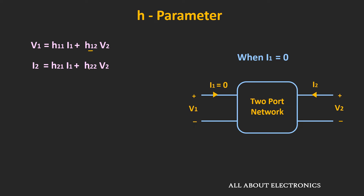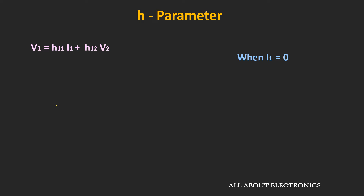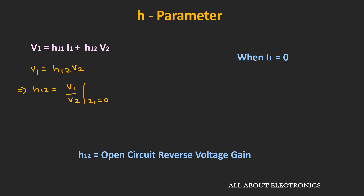The parameters h12 and h22 can be found when current i1 equals 0 — that is, when port 1 is open-circuited. When i1 equals 0, from the first expression: v1 equals h12 times v2, so h12 equals v1 divided by v2. The voltage in the numerator is on the port 1 side and in the denominator on the port 2 side. This is a unitless parameter, and with port 1 open-circuited, h12 is known as the open-circuit reverse voltage gain.